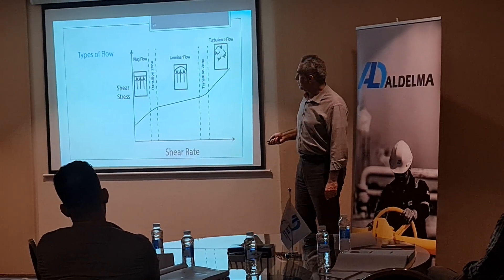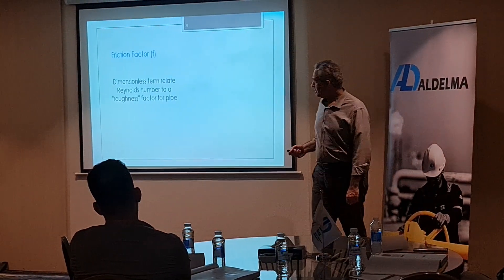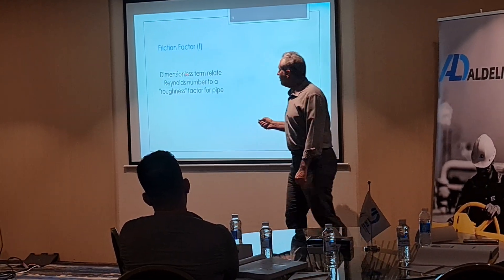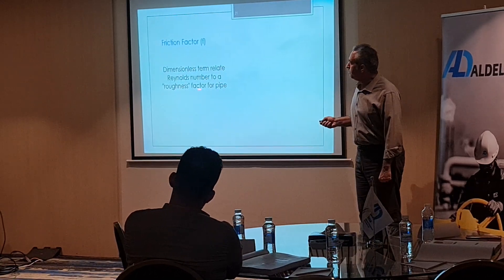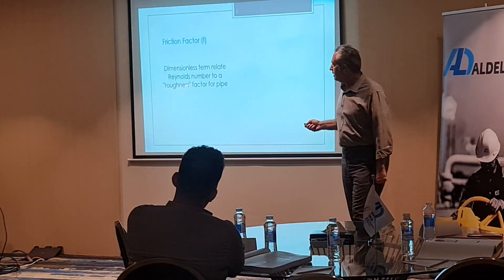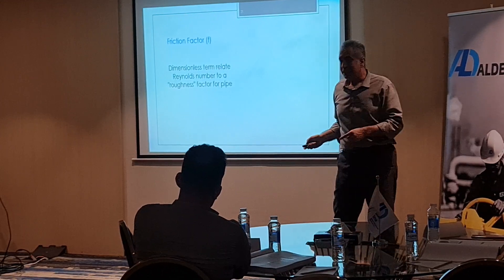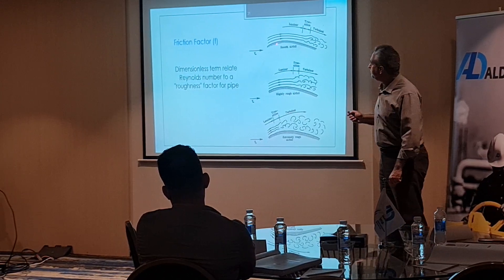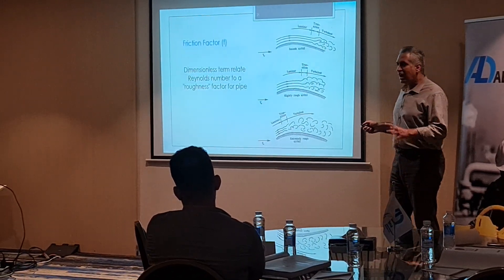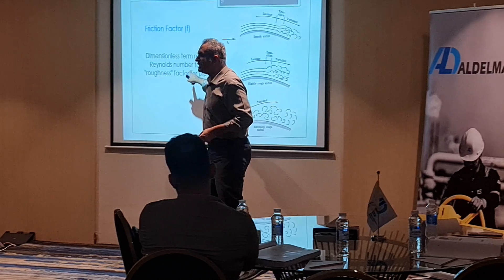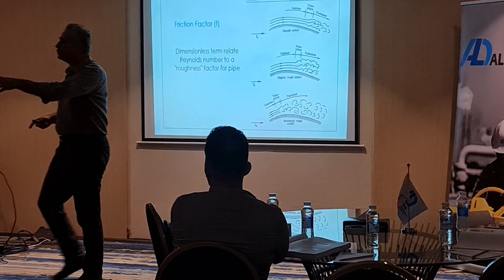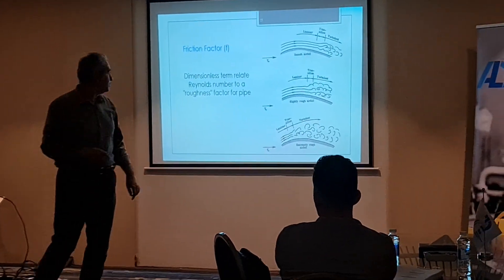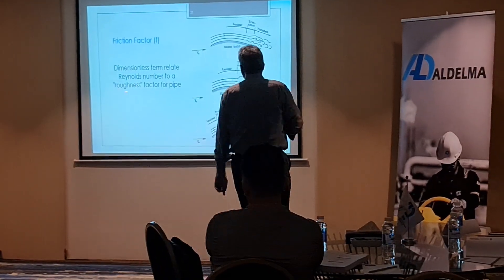With higher Reynolds numbers, here is another term — we call it the friction factor. This is a dimensionless term related to the Reynolds number and the roughness factor of the pipe. This F is relevant for turbulent flow. When we want to calculate pressure drop, we use this F, and there's a chart for that, which software now calculates automatically.